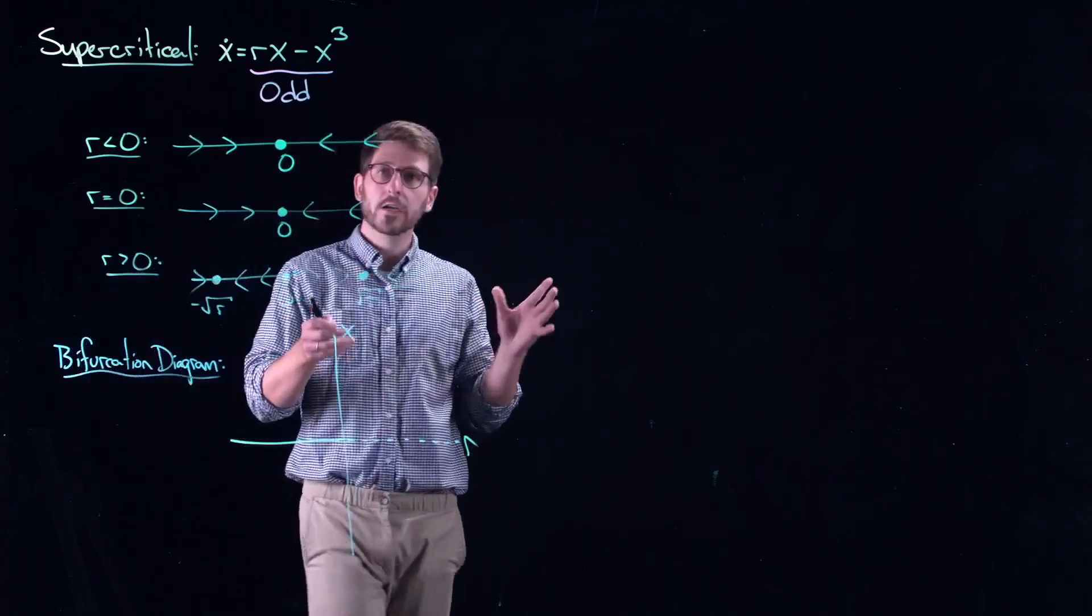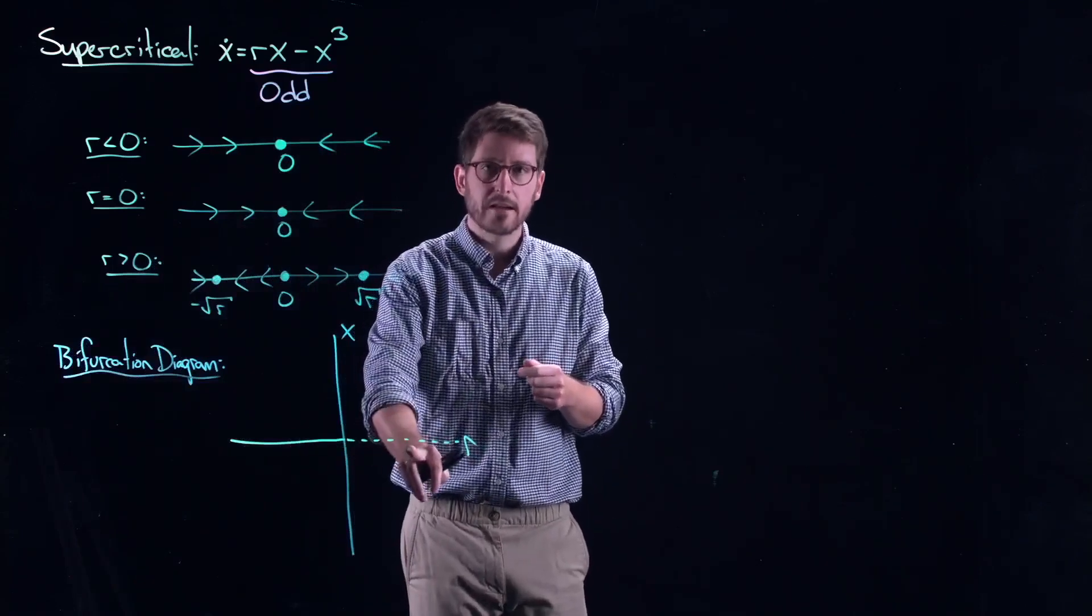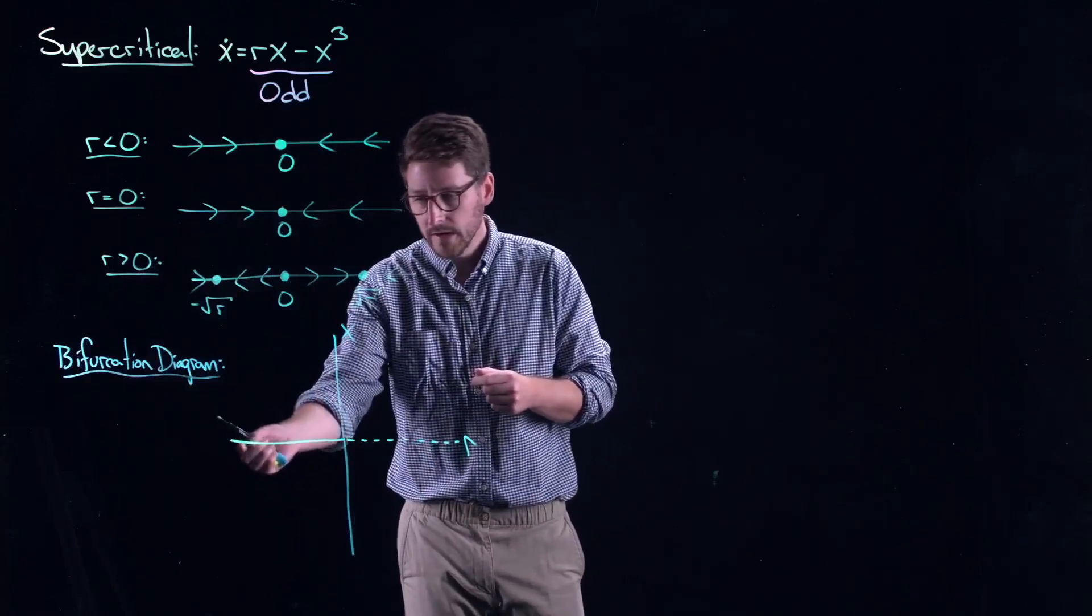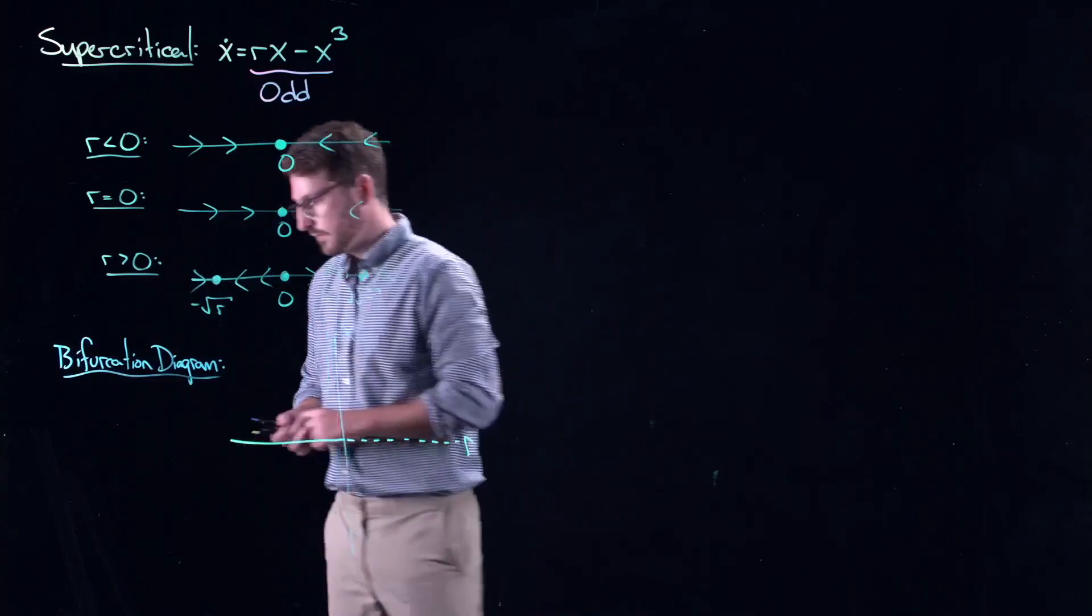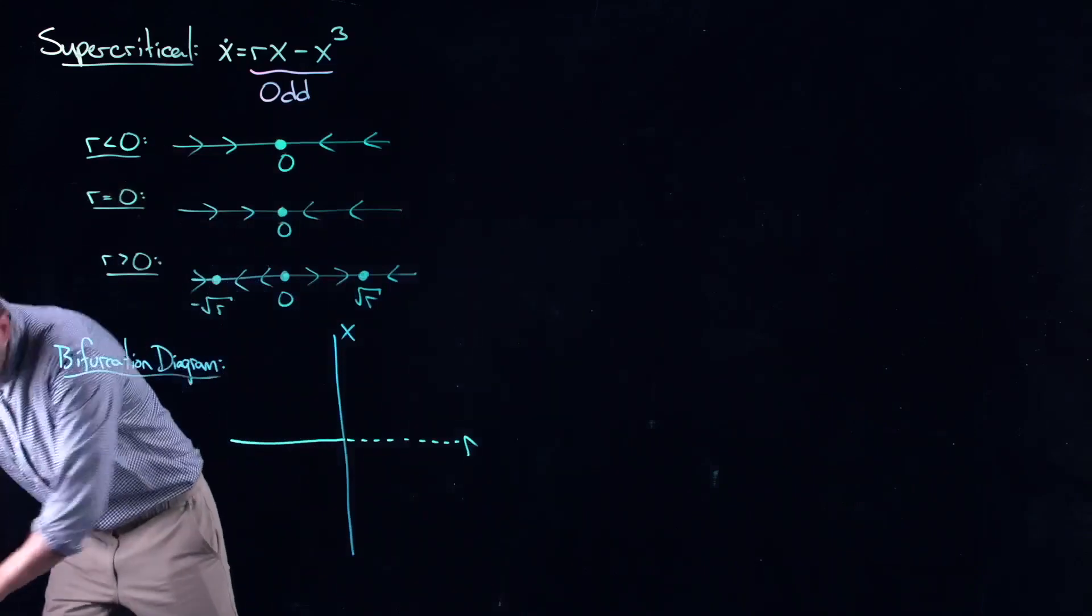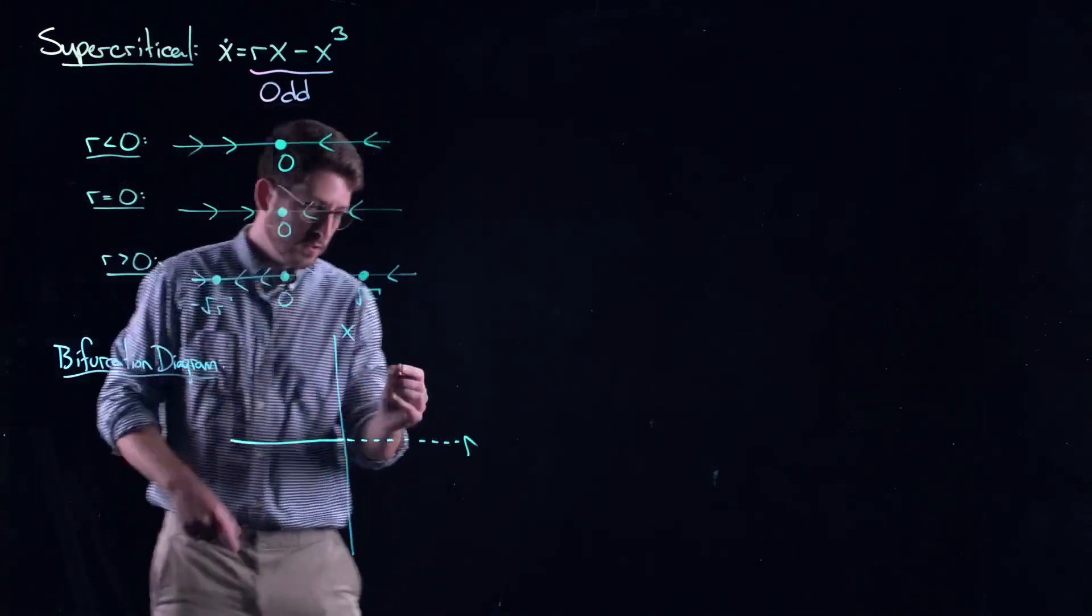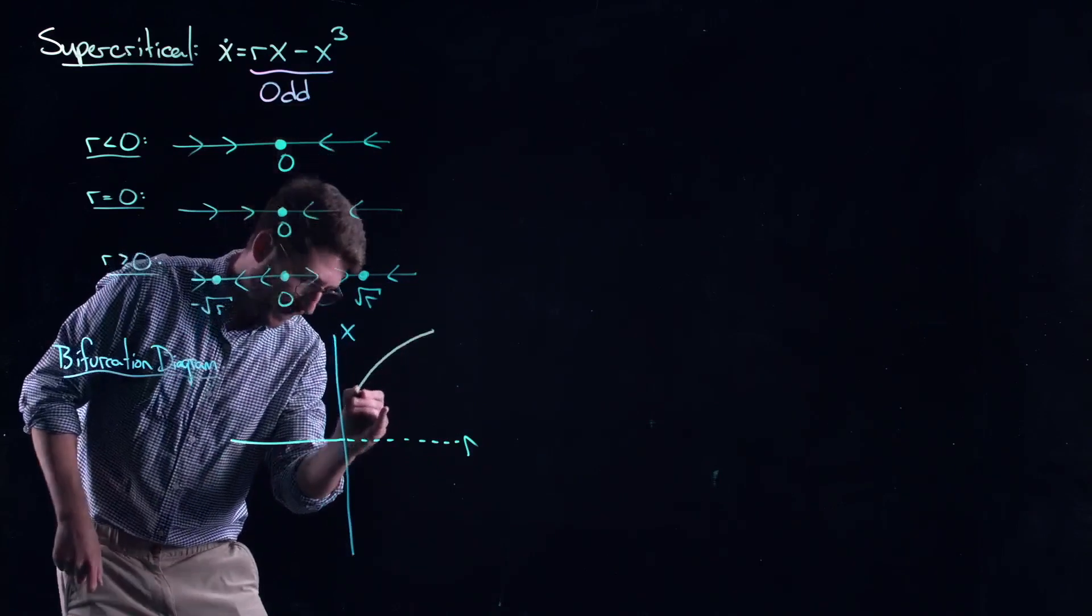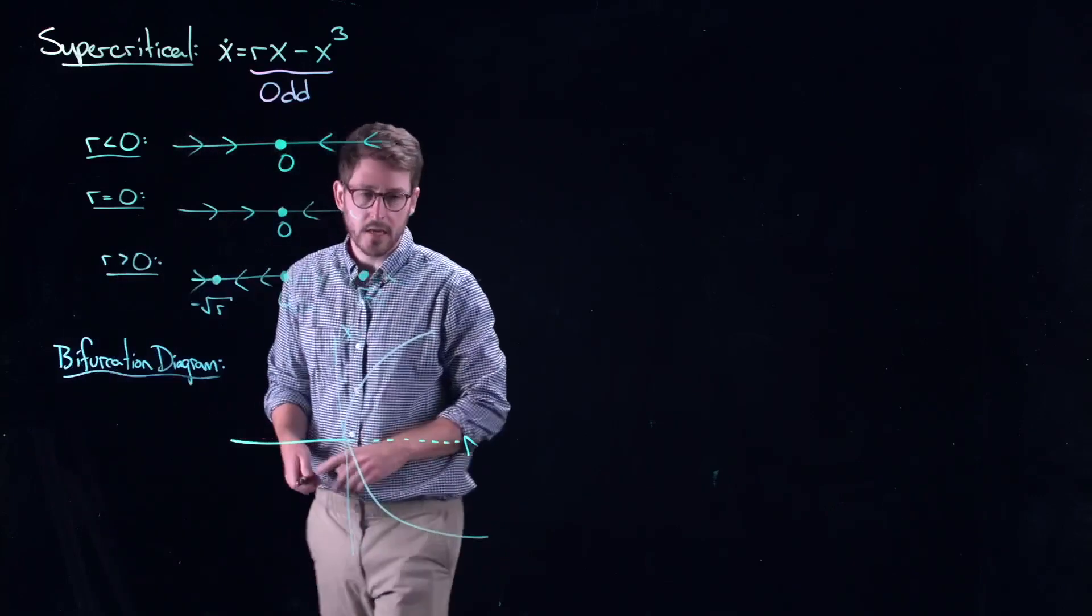I'm not going to write stable and unstable on here anymore. Solid line means stable. Dash line means unstable. So x equal to zero is stable when r is negative. It is unstable when r is positive. And then, you get these two fixed points that emerge that are symmetrically related.